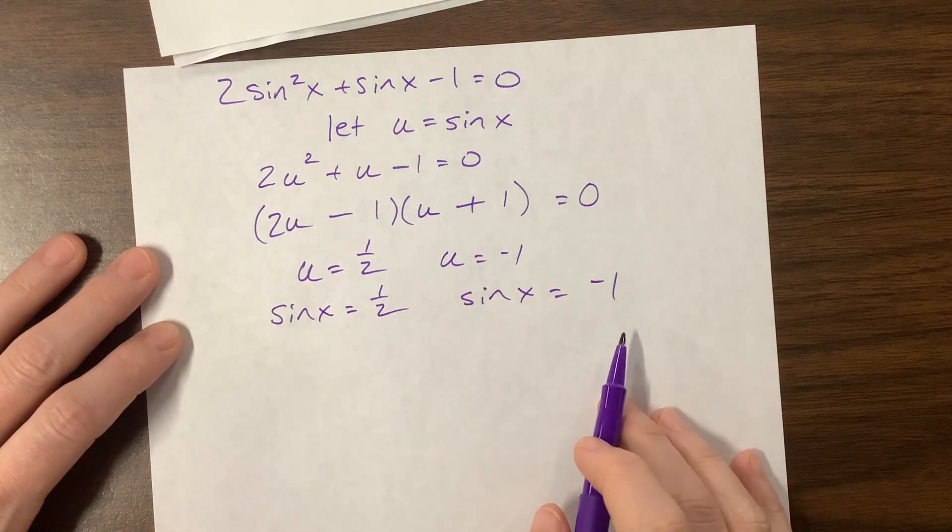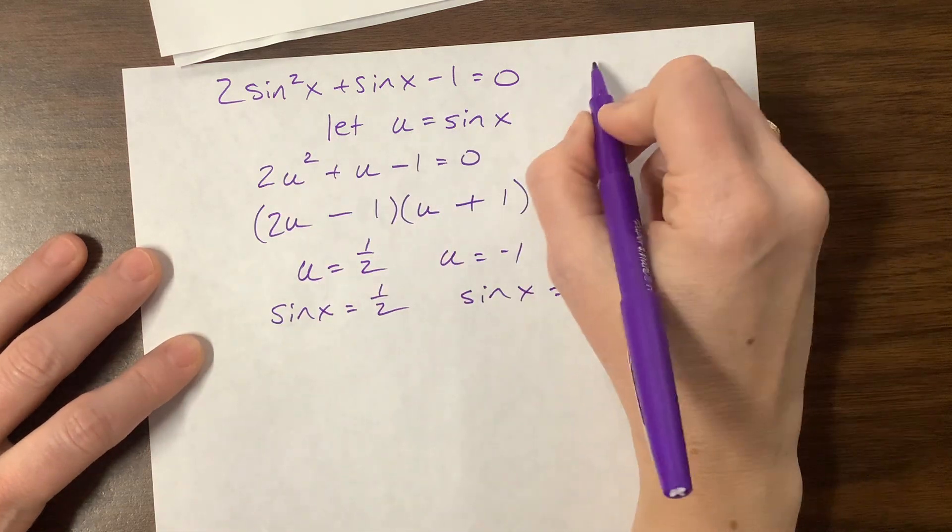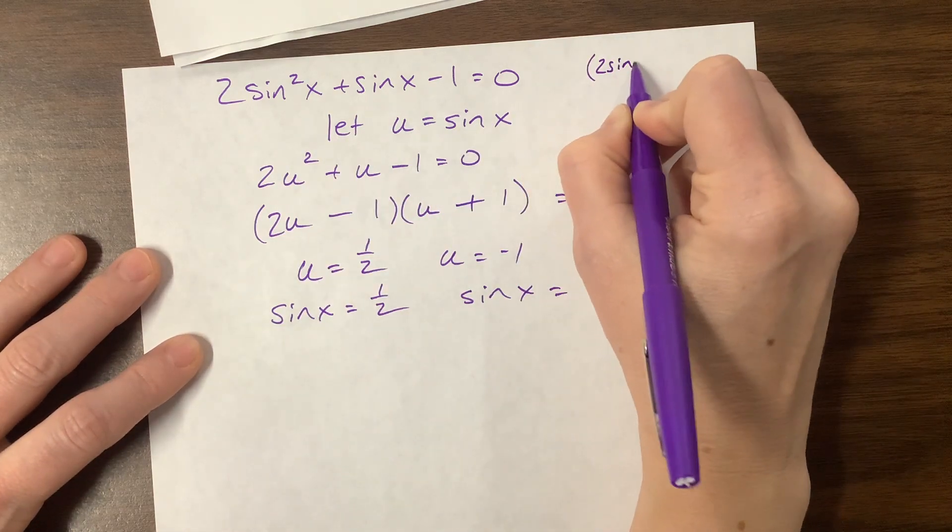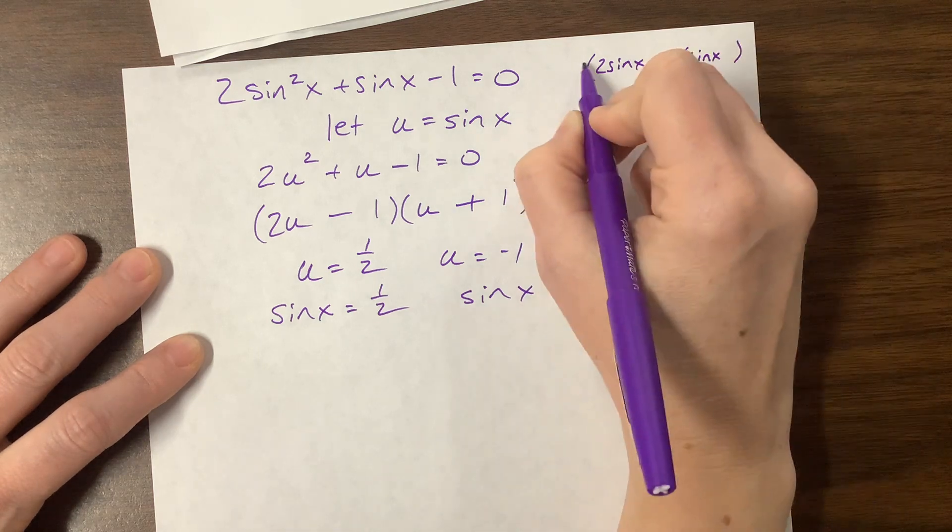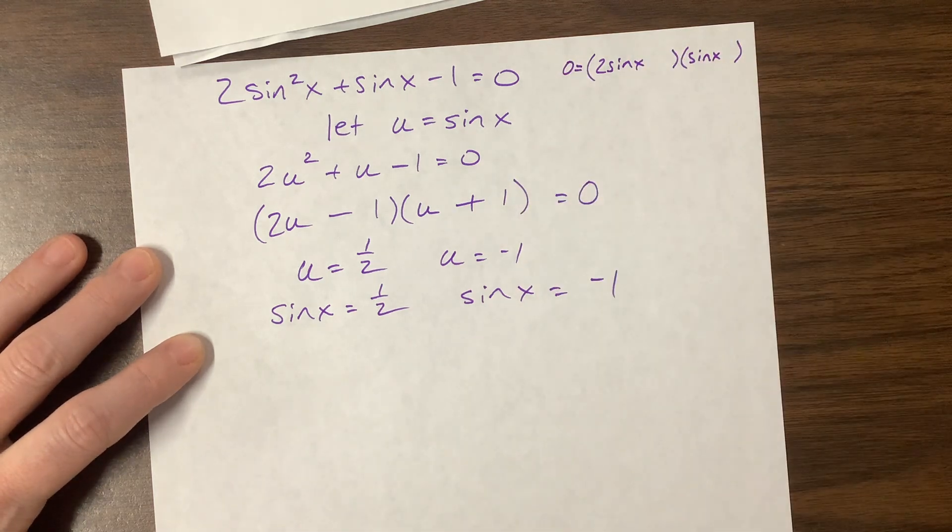You don't have to jump to this point. If you see this and think, oh, this factors as just 2 sine of x and then sine of x. I did not give myself enough space. I'll put the 0 here.